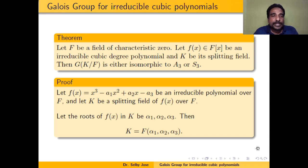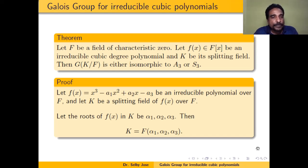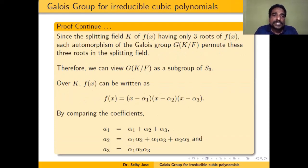Let the cubic degree irreducible polynomial be f(x) = x³ - a1·x² + a2·x - a3, and let K be the splitting field of f(x) over F. Because f(x) is a degree 3 polynomial, it has three roots. Let the roots of f(x) be α1, α2, α3. Then the splitting field K = F(α1, α2, α3), and each automorphism of the Galois group of K over F permutes these three roots.